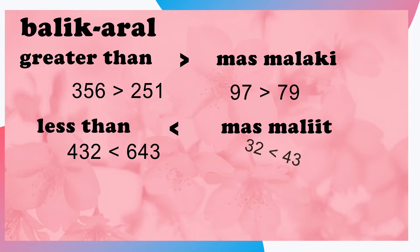Pangalawang halimbawa, ang tatlong put dalawa ay mas maliit o less than sa apat na put tatlo.